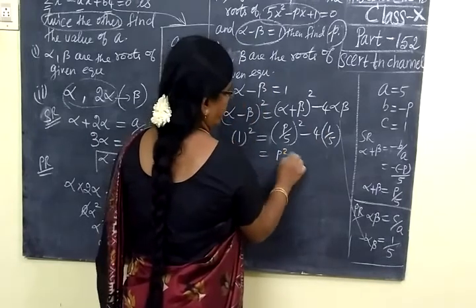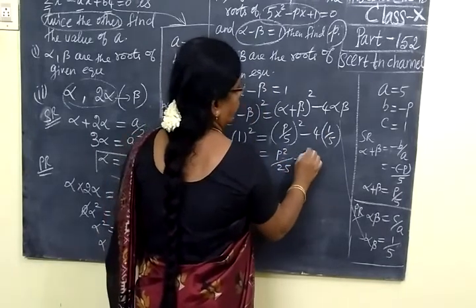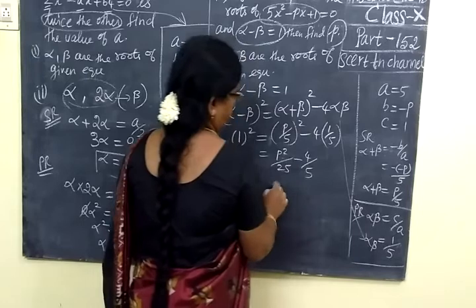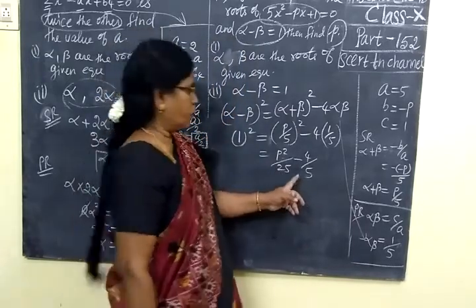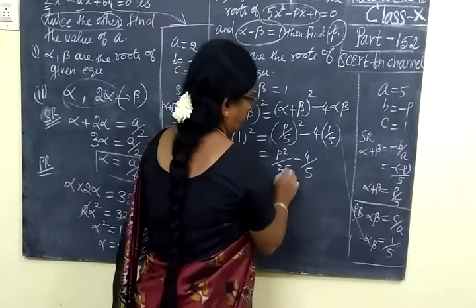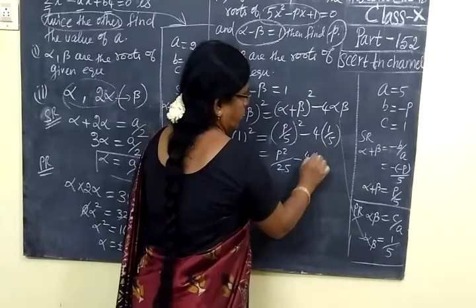So p squared by 25 minus 4 by 5. You want to make that denominator equal. The denominator is 5.